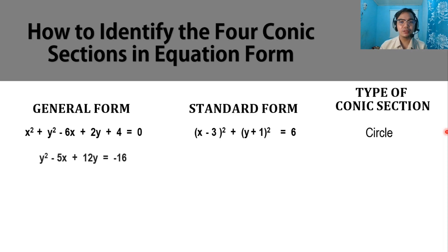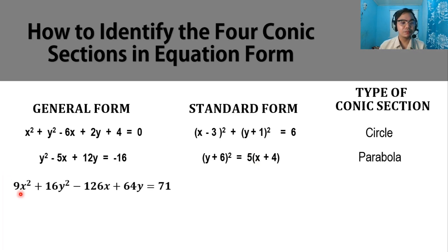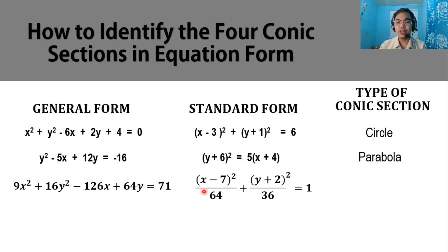For the second general form, we have y squared minus 5x plus 12y equals negative 6. Transforming this into standard form, we have quantity y plus 6 squared equals 5 times quantity x plus 4. This equation is a parabola. The next general form is 9x squared plus 16y squared minus 126x plus 64y equals 71. Transforming this into standard form, we have quantity x minus 7 squared over 64 plus quantity y plus 2 squared over 36 equals 1. This conic section is an ellipse.